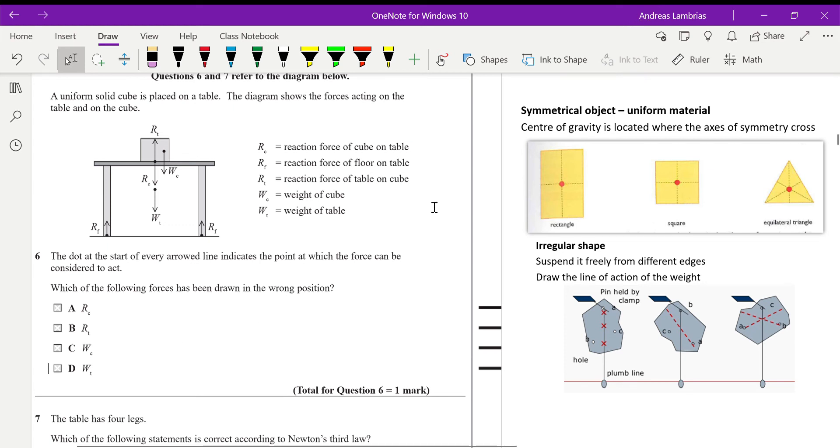In this question we have a solid cube which is placed on the table. The diagram shows all the forces acting on the table and on the cube. The dot at the start of each force indicates the point at which the force can be considered to act.